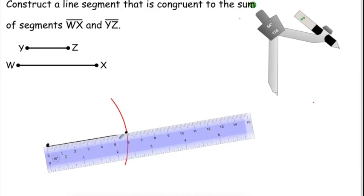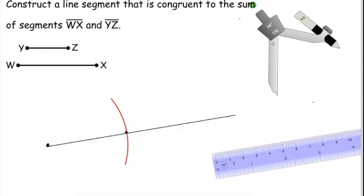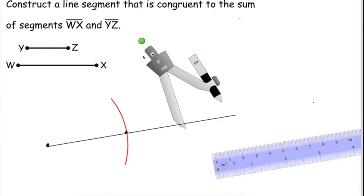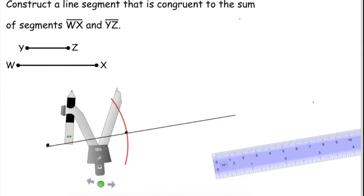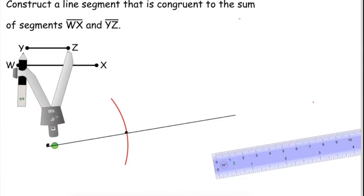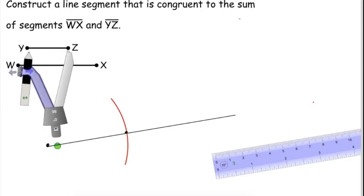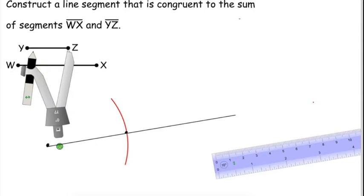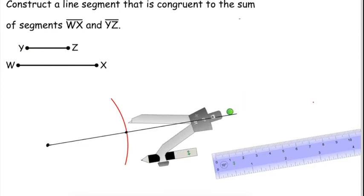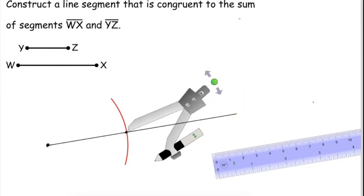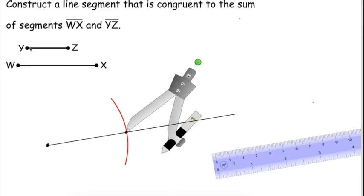So this represents the distance from W to X, but if I keep going, I'm going to find some other distance I need to add to this. We can bring our compass back and now use it to measure the distance between Y and Z. Put one side of your compass on point Z, and then line up the other side of your compass so it's on point Y. Now that I have the distance from Y to Z measured, I can bring my point onto the red arc and draw another arc. This will add the distance of YZ onto the distance from WX.